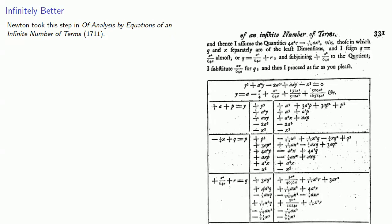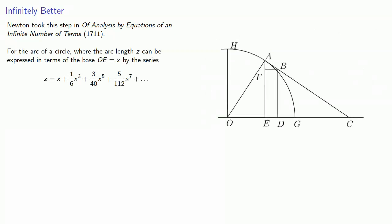Newton took this step in Of Analysis by Equations of an Infinite Number of Terms. Newton's ability to solve an infinite series for one of its variables allows Newton to invert his series for the arc length and for the area under a rectangular hyperbola. Remember that for the arc of a circle, where the arc length Z can be expressed in terms of the base OE equal to X by the series. If we take a look at this from a modern perspective, we see that Z is actually the arcsine of X. And so, Newton has essentially found a series for arcsine.